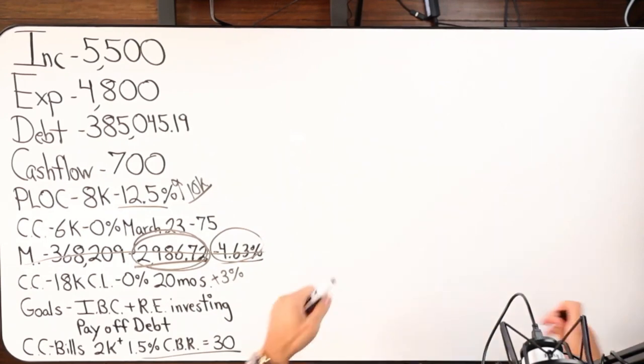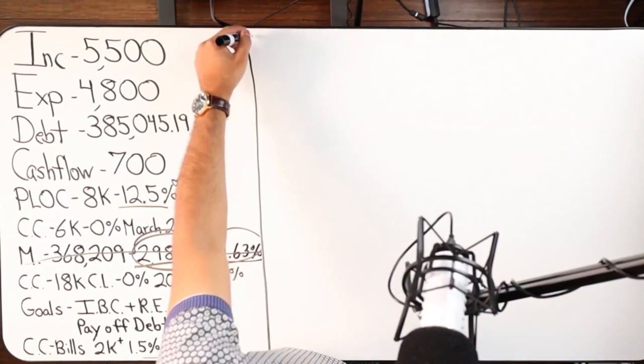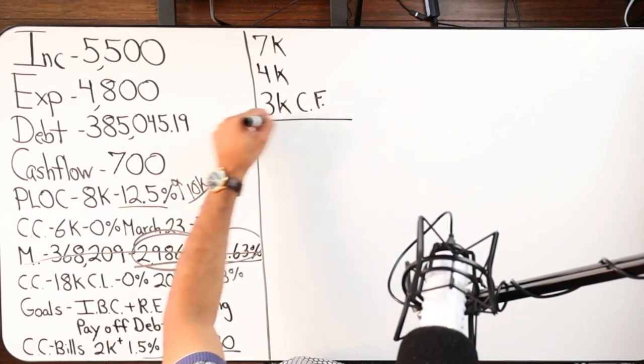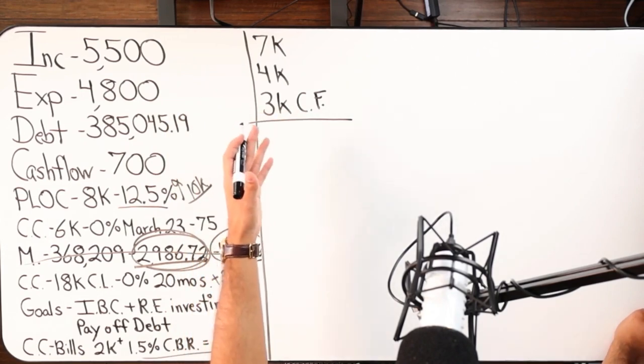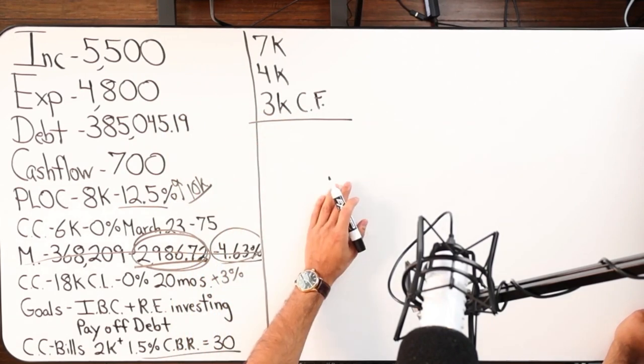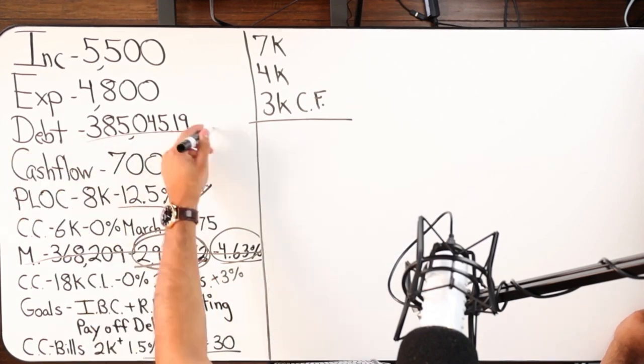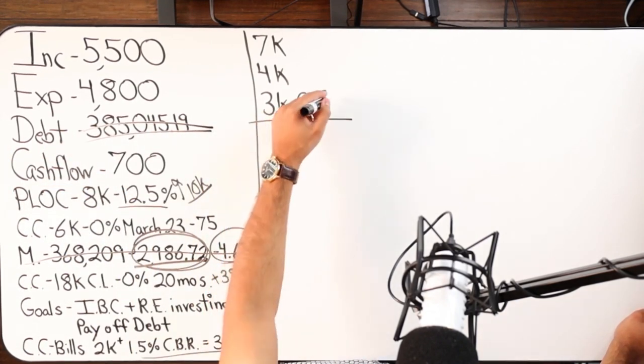Alright, Doug is putting us in a situation. He said let's say I'm making 7k, spending 4k, so cash flow is 3k, right? Say I got a good job like he said, a good career, solid. And no debt, right? Completely debt-free. Okay, cool.